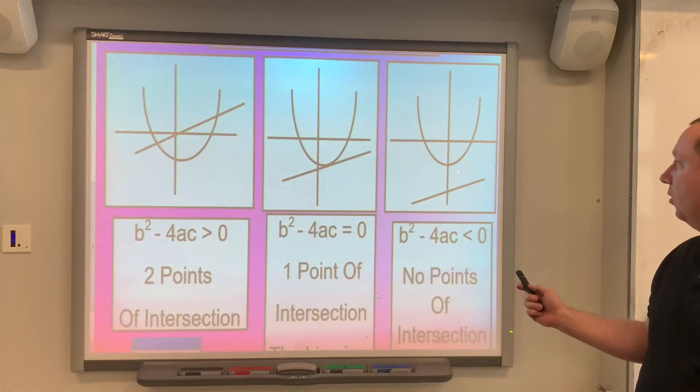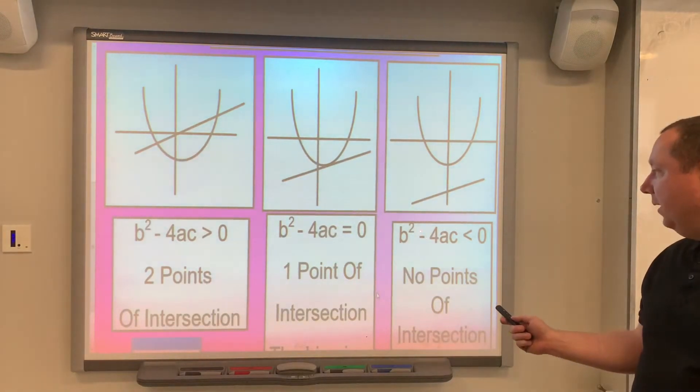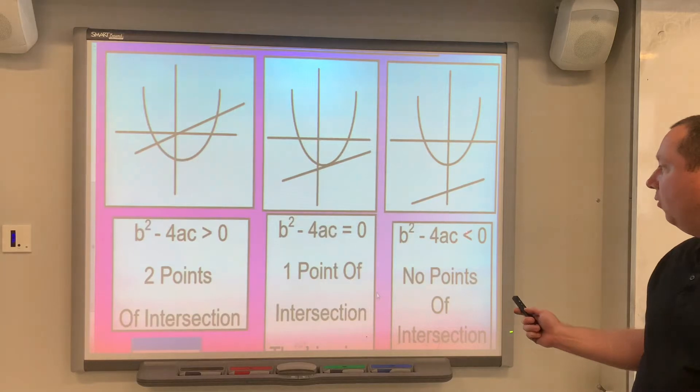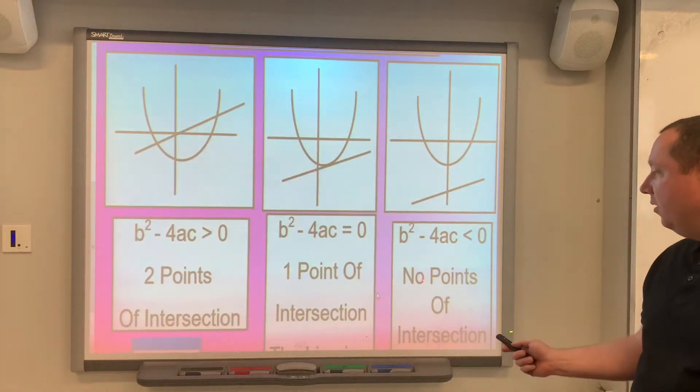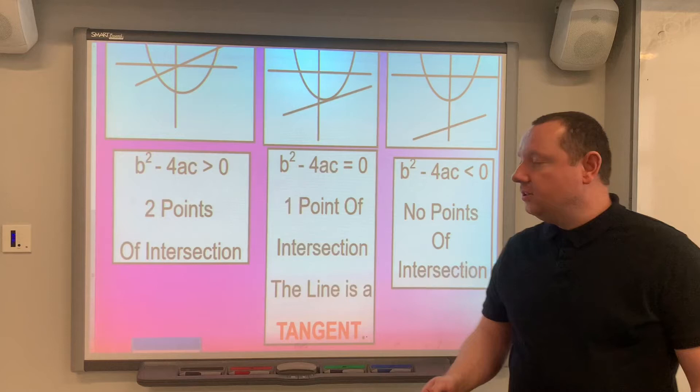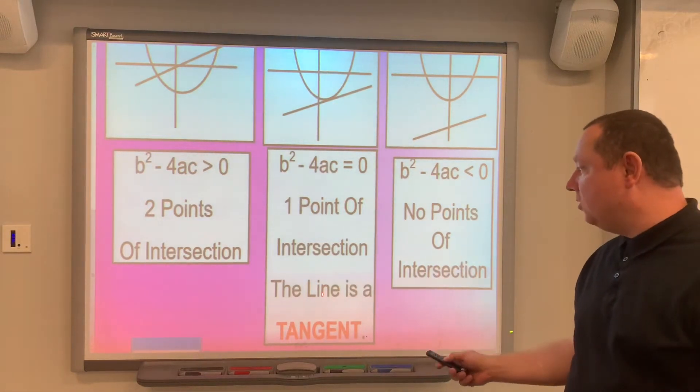Clearly, you could also get from not touching at all. That would be the case when b squared minus 4ac is less than zero. There'd be no points of intersection.